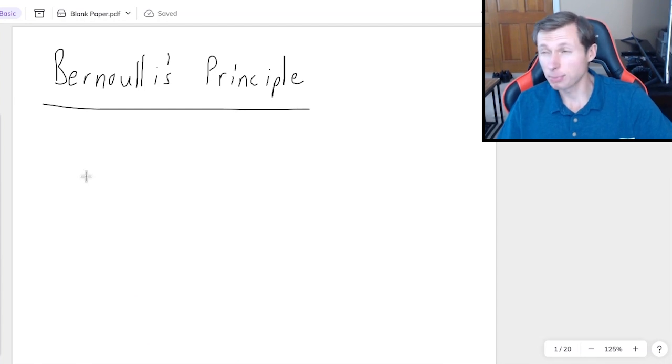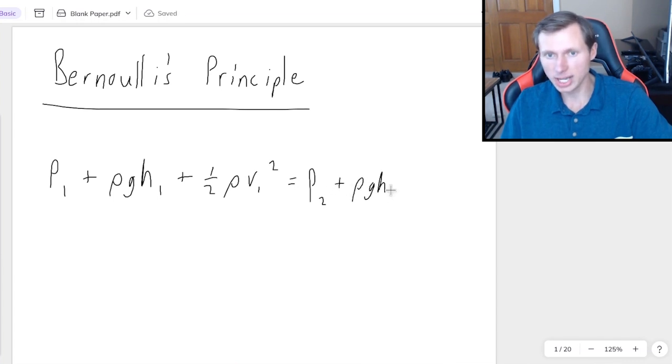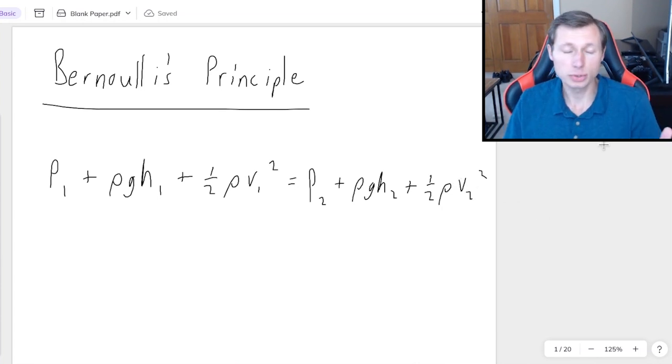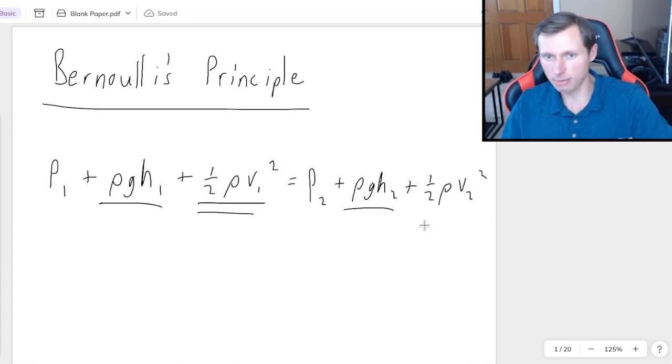So first, let me give you the formula. It's probably the longest equation in Physics 1. It is P₁ + ρgh₁, where ρ is density, but I'll be explaining all these variables in a second, plus ½ρv₁². That is equal to the exact same thing, except replace all the ones with 2s. So P₂ + ρgh₂ + ½ρv₂². And the reason why we use Bernoulli's Principle is because there is a pressure difference between two points, either because of gravitational potential energy, which is the ρgh, or because of kinetic energy, the ½ρv².